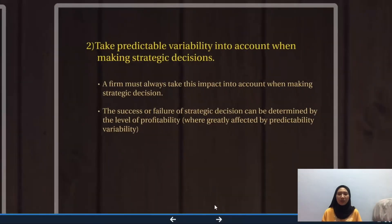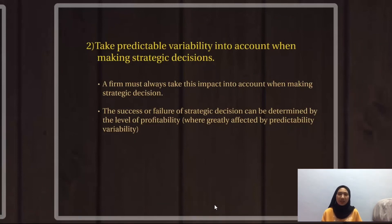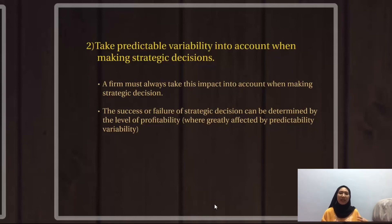The second point is to take predictability into account when making strategic decisions. Predictable variability is not always considered when deciding what type of products to offer, whether to build a new facility, or what pricing structure a company should have. When making decisions, a firm must always take this impact into account. The success or failure of strategic decisions can be determined by the level of profitability, which is affected by predictable variability.